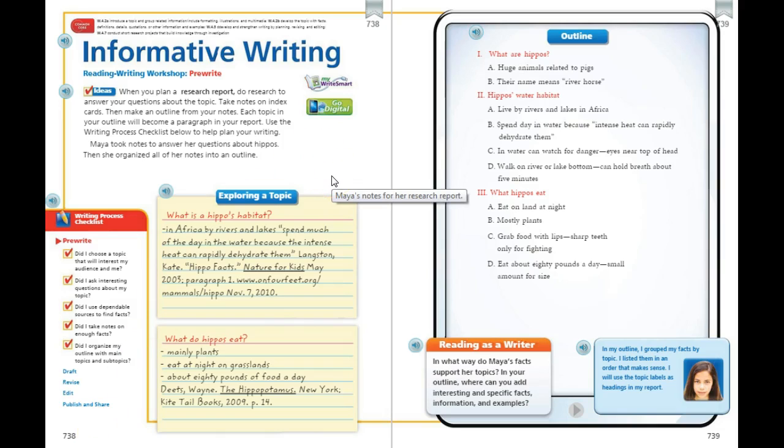So this is Maya. She took notes to answer her questions about hippos, and then she organized all of her notes into an outline. This is a very formal outline, but here she was exploring what is a hippo's habitat, and she found out that in Africa's rivers and lakes, you'll find hippos.